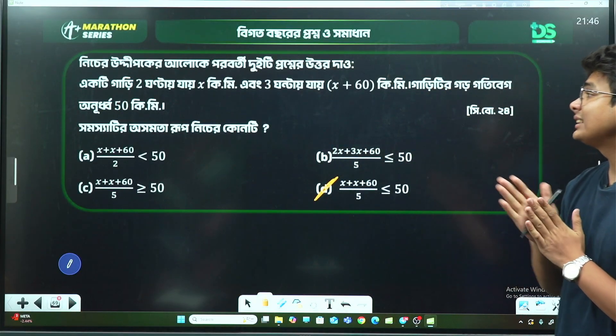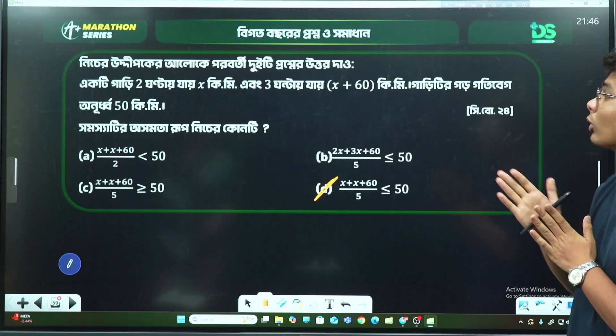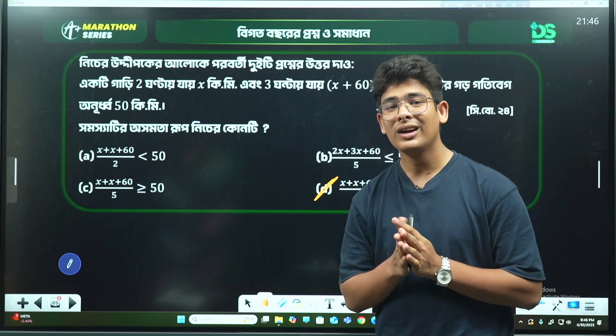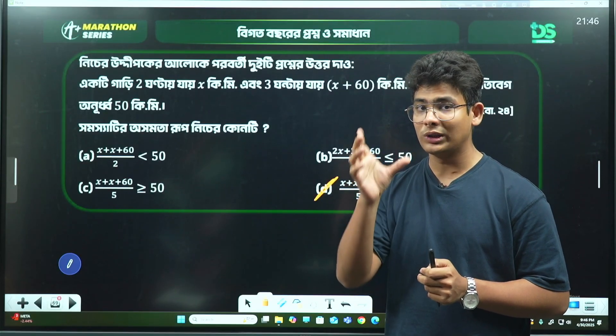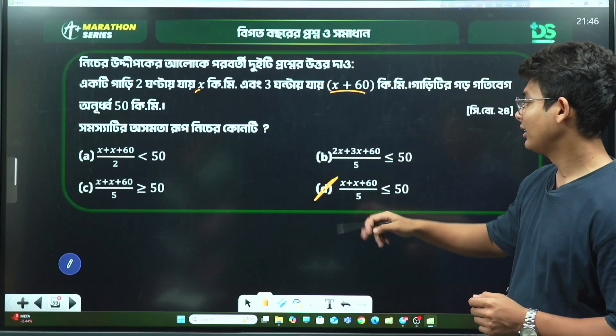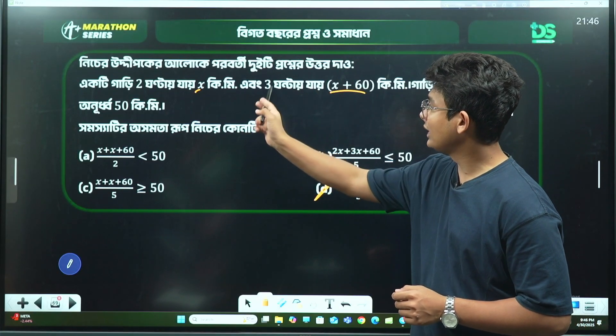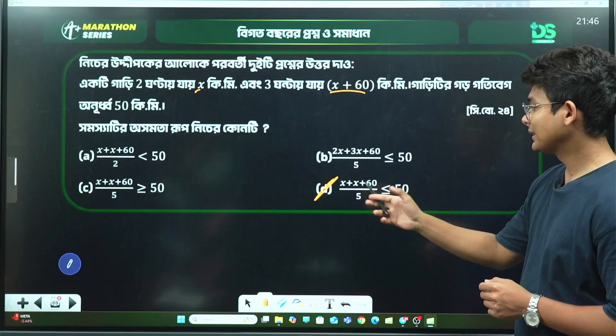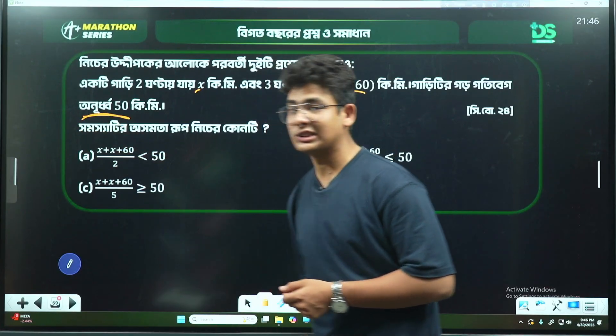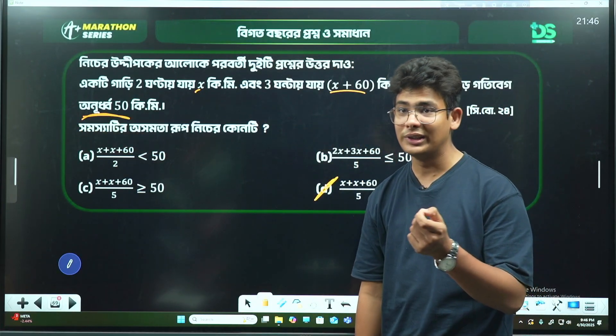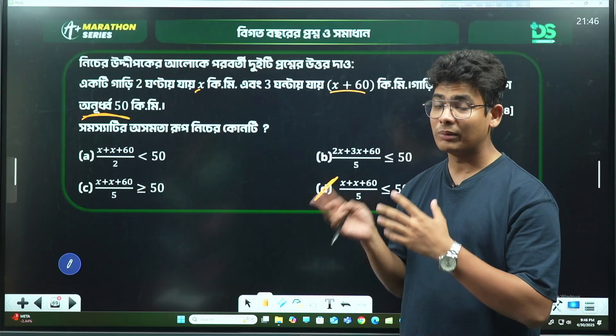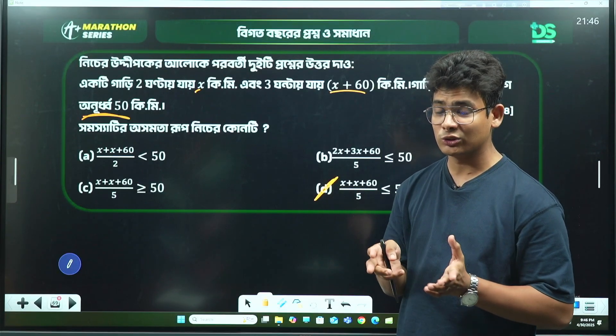Next problem: someone travels x kilometers one way and x + 60 kilometers returning. The total distance is x + (x + 60) = 2x + 60. If this divided by 25 is ≤ 50 (average less than 50), we need to solve this inequality.